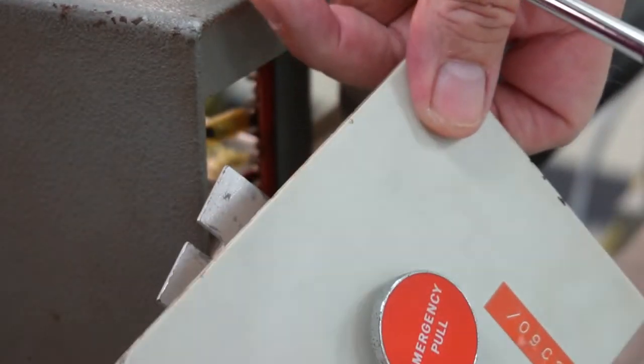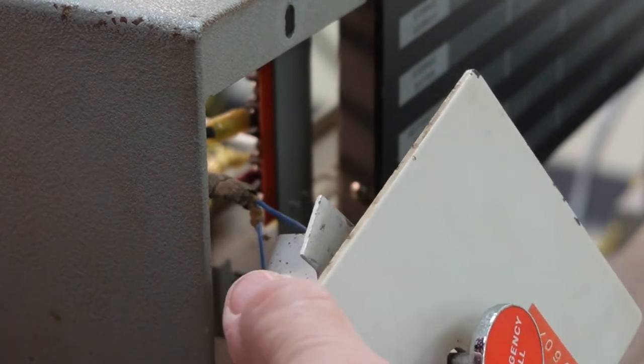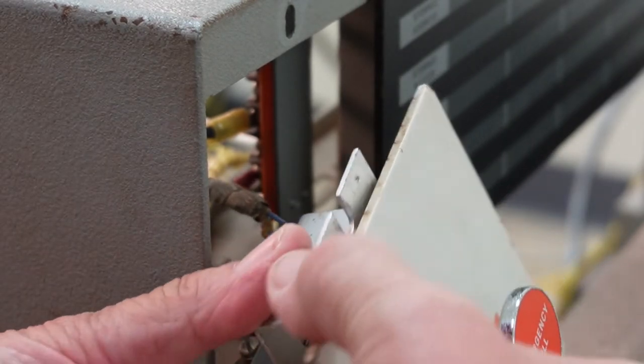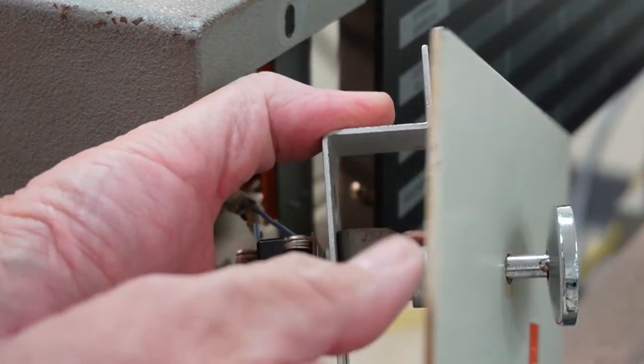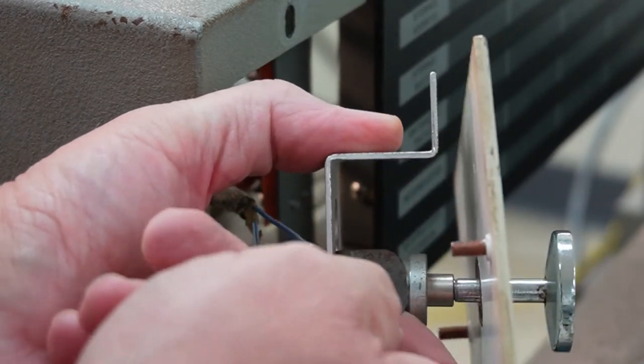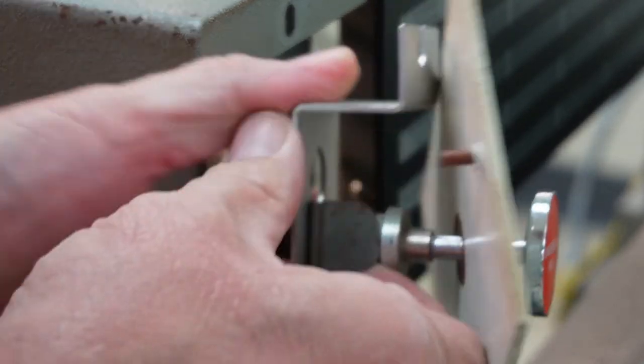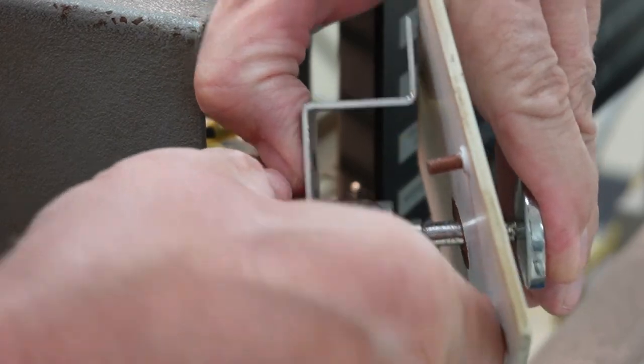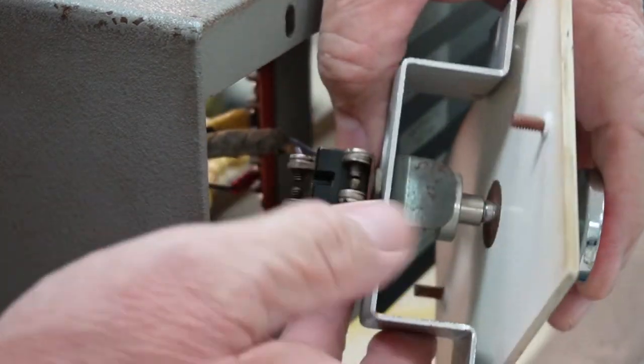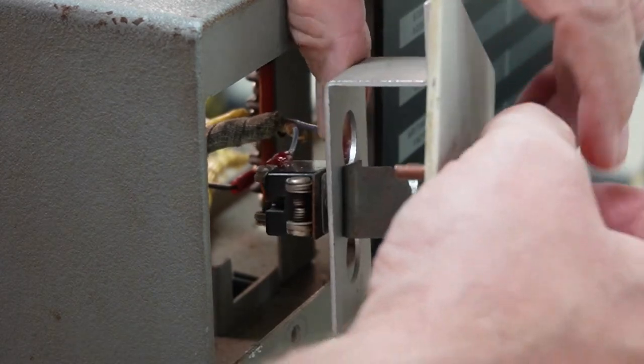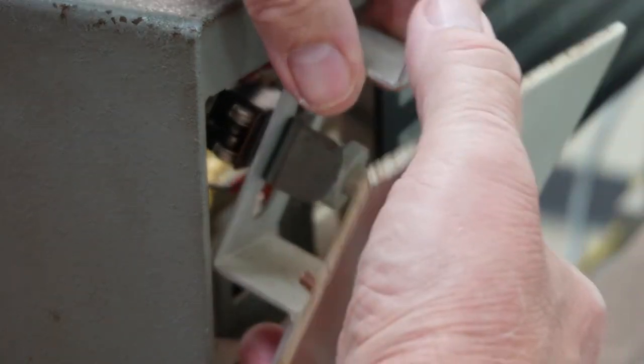This emergency pull switch has unfortunately been pulled in my effort to get the switch out. The way it latches in place is this very simple mechanical detent—you pull that spring steel out and you push it in. It's now turned on again, allowing the machine to be powered, but if that gets pulled out it drops all power immediately.